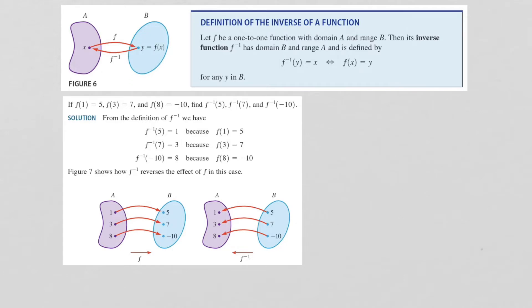Now let's define what it means to be an inverse of a function. If we assume that a function f is one-to-one with a domain A and a range B, then its inverse function, which we call f inverse, has domain B and range A.